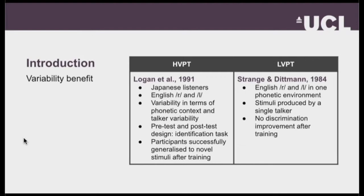They also found that participants were able to successfully generalize to novel stimuli after training — stimuli they hadn't been presented during the training phase. Based on these results, the authors interpreted the findings as evidence that stimulus variability benefits categorical perception of non-native contrasts. Logan and colleagues argued that high variability in the training material helps listeners form robust phonetic categories for second language contrasts.